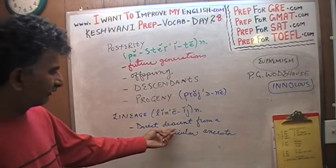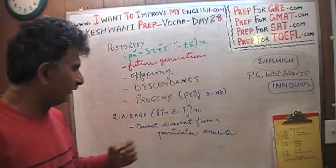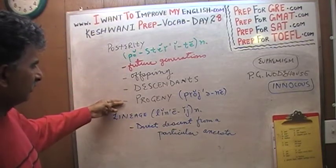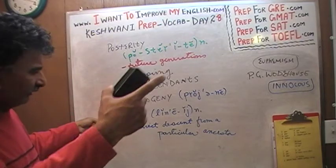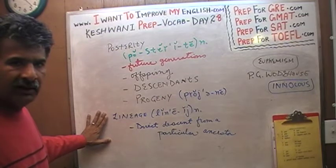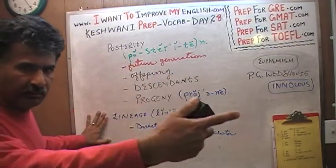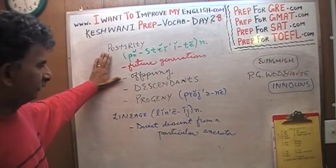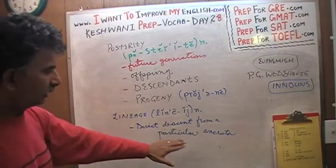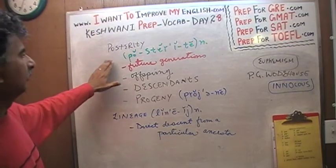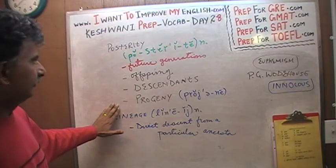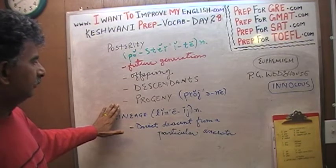Lineage means to claim a direct descent from a person in the past. Here we're talking about your descendants, here we're talking about your ancestors. Posterity means future generations, offspring, descendants. Another very nice way of saying posterity is progeny.